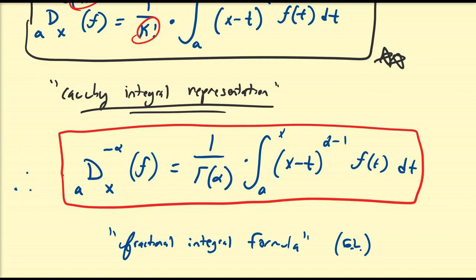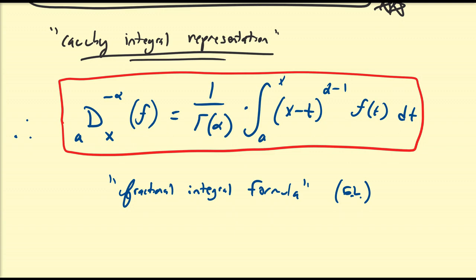This is the fractional integral formula, which comes from the GL derivative — the Grünwald-Letnikov fractional integral definition. In this video, we have proven the connection between derivatives and integrals: integrals are just inverse derivatives, so the negative second derivative is the second integral, and the negative third derivative is the third integral. In upcoming videos, we'll establish properties associated with these definitions, since this integral representation is more useful for deriving properties compared to the traditional series representation.